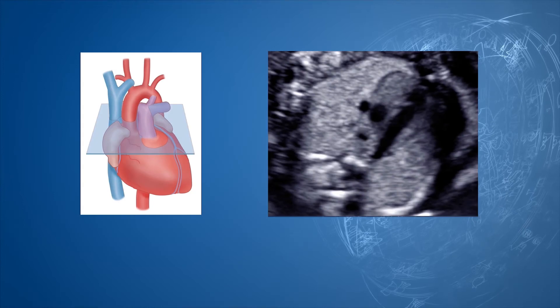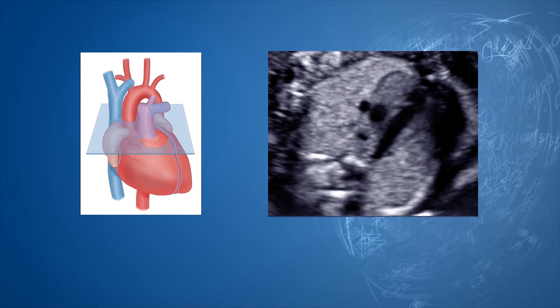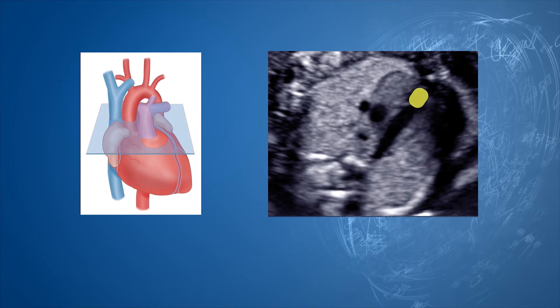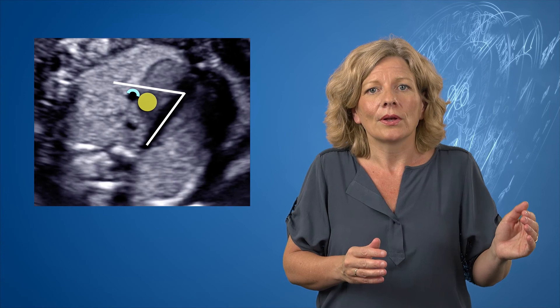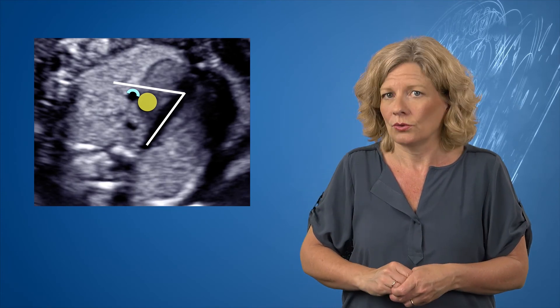Then the three-vessel view — again a transverse plane. Connect the pulmonary artery to the upper part of the right ventricle. The pulmonary artery is identified by its bifurcation. In the three-vessel view, you should identify the superior caval vein and the aorta. The aorta is more or less equally sized compared to the pulmonary artery. If you draw a line — the Leiden line — from the pulmonary valve to the caval vein, the aorta should be beneath it. This Leiden line angles with the pulmonary artery at 48 to 70 degrees.